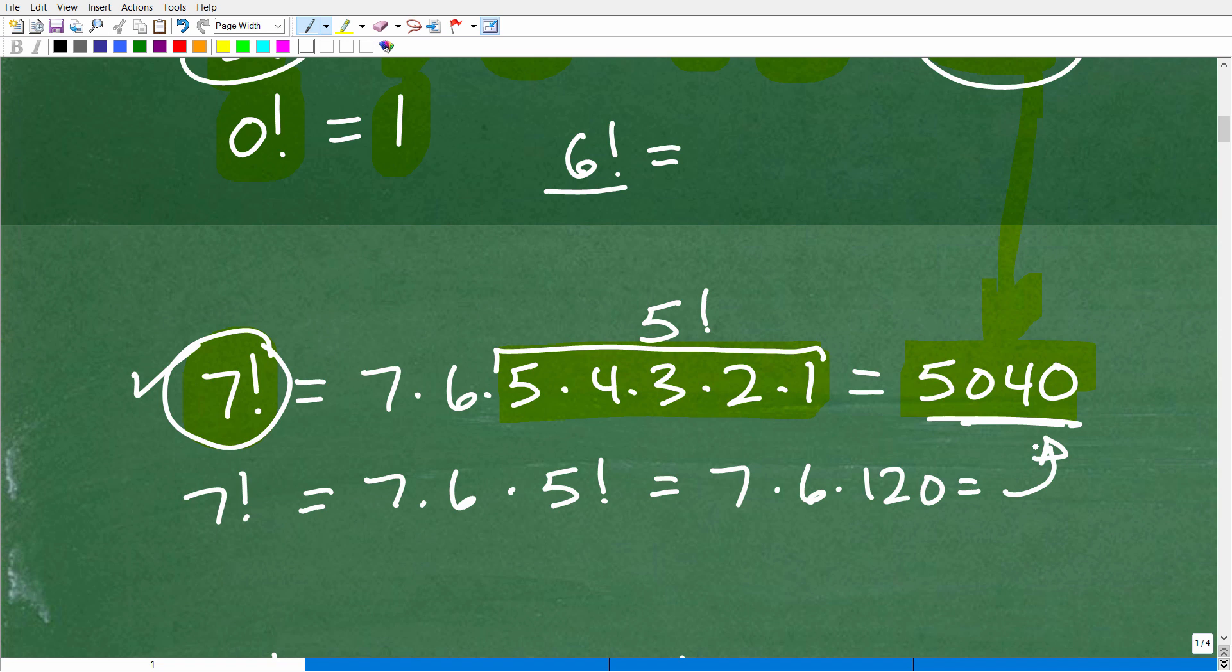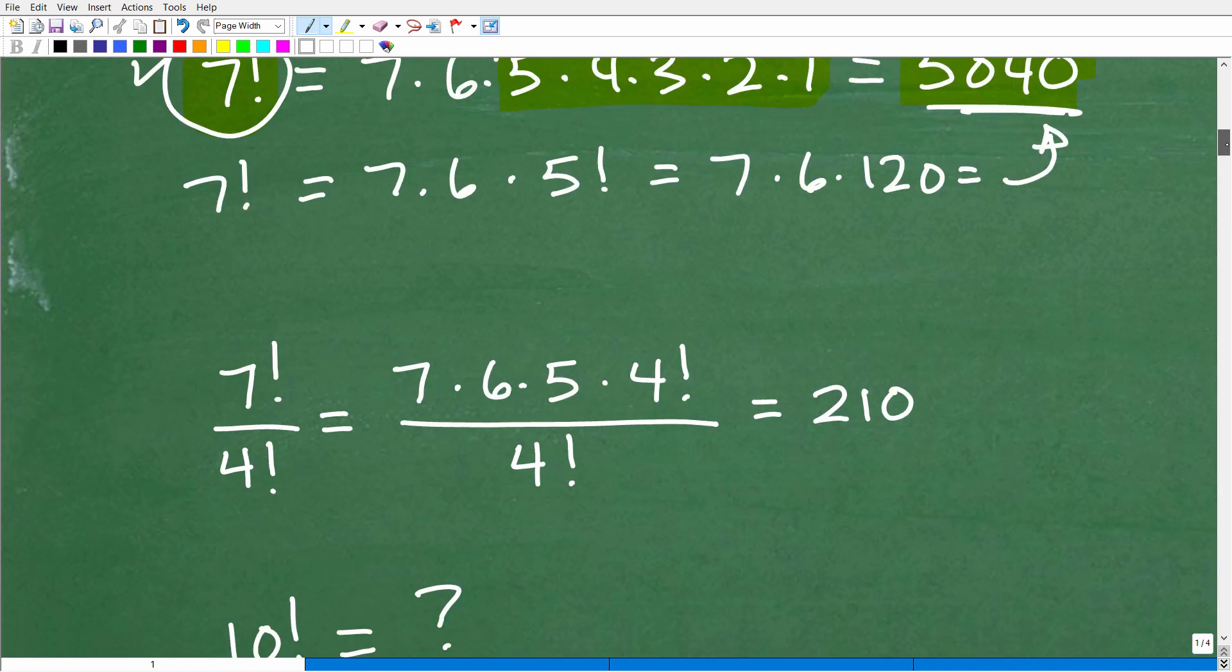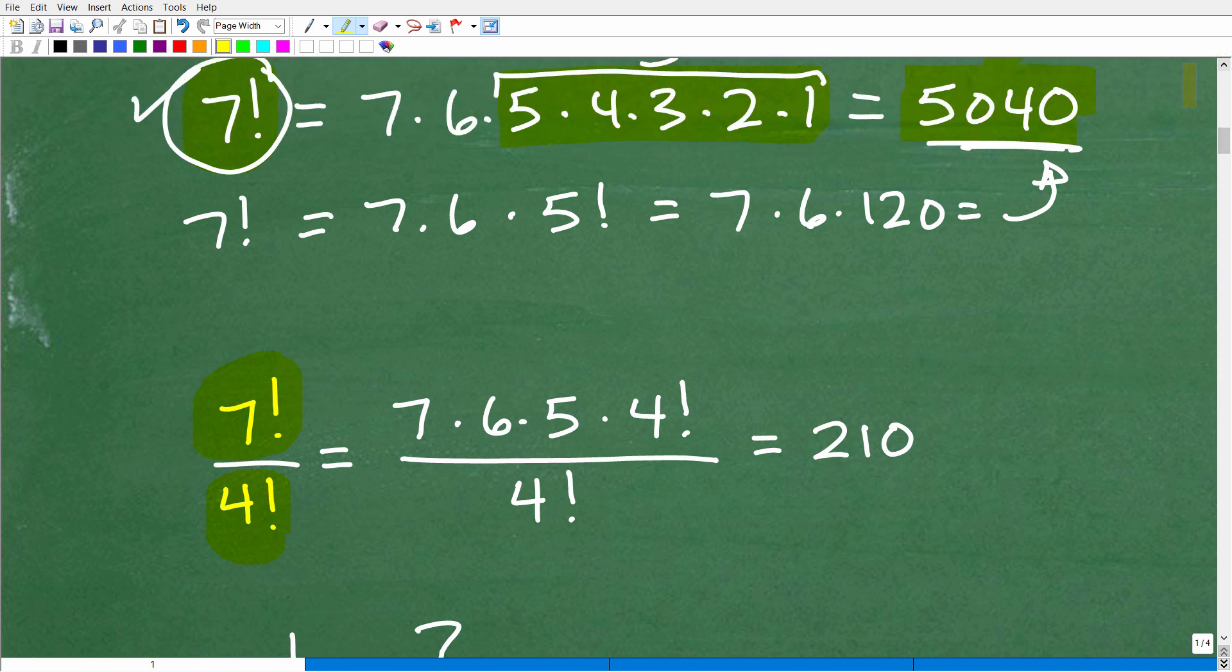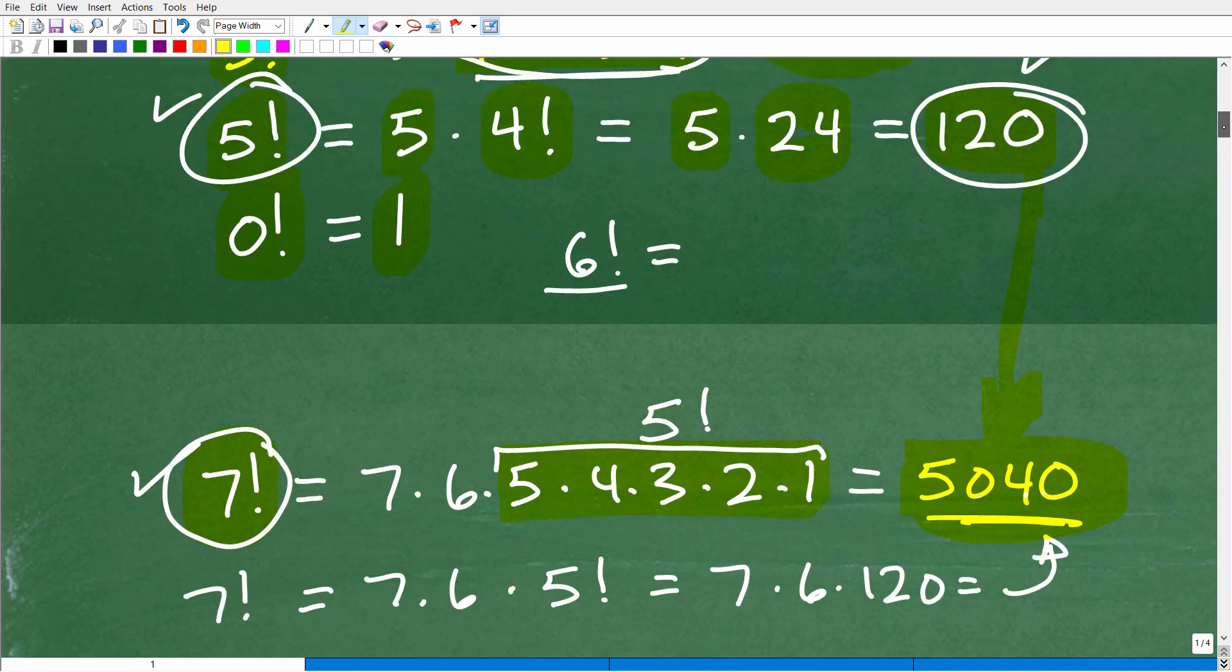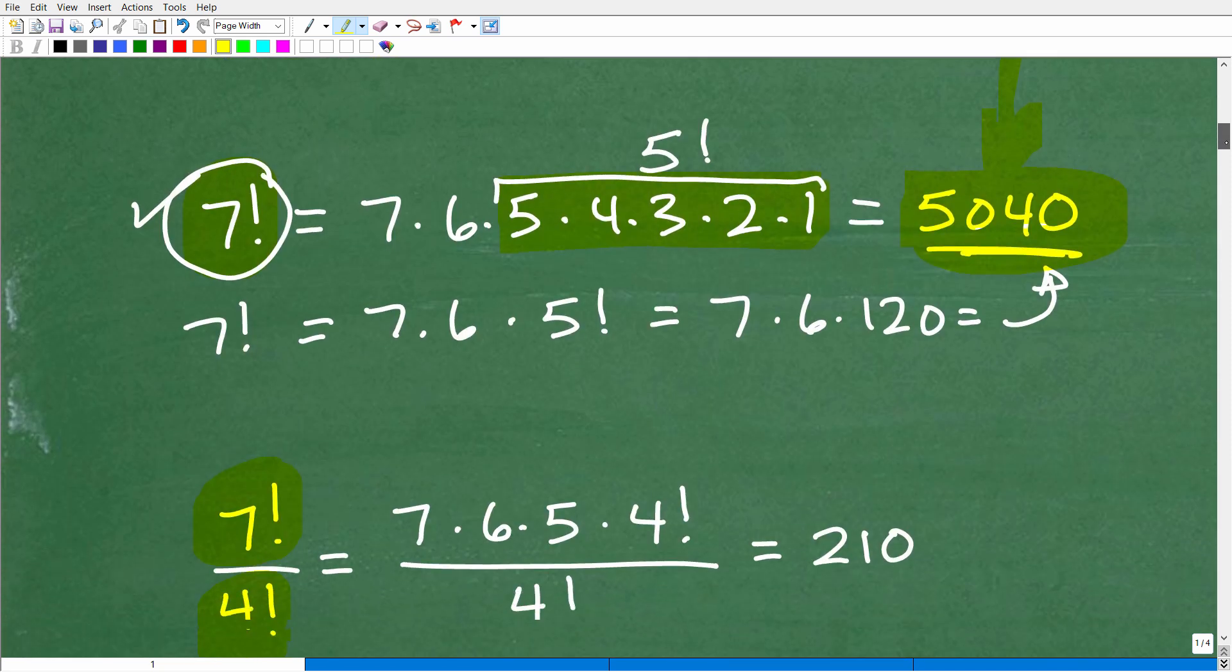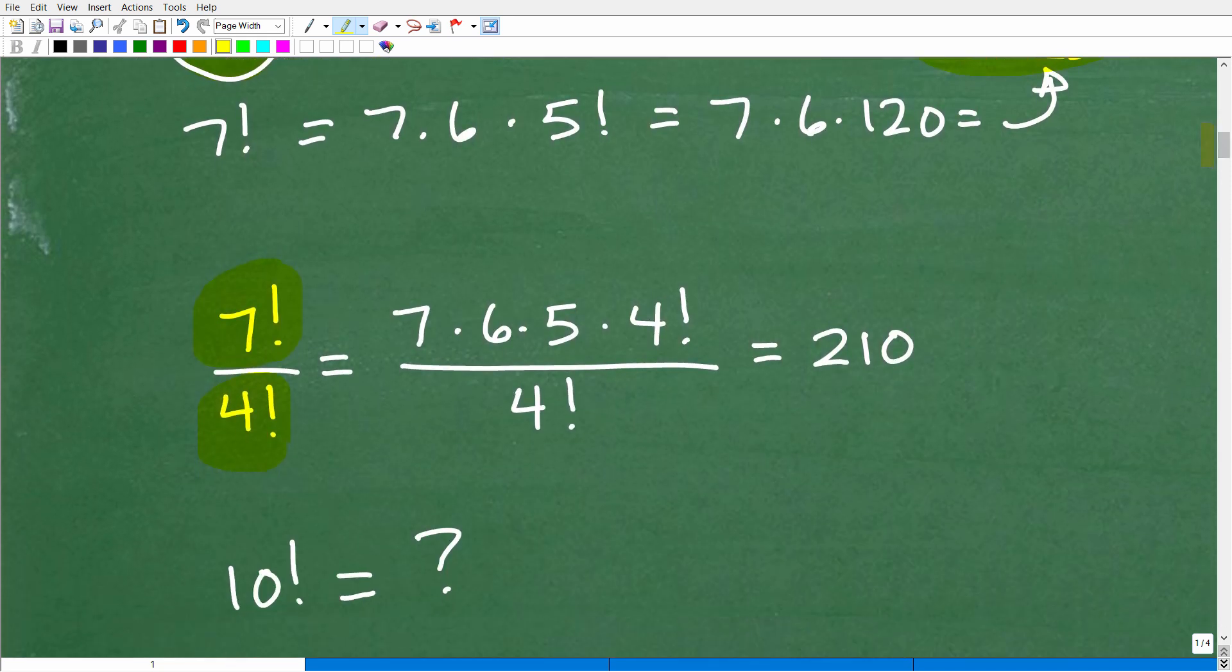So you always want to keep that in mind. But now here is kind of what I want to show you next is how we can simplify problems like this. So let's say we have 7 factorial divided by 4 factorial. So instead of doing 7 factorial, figuring that whole thing out, that's quite a bit of work, right? That's 5,040. And then we divide it by 4 factorial. And, of course, we know what 4 factorial is. That's 24. We could kind of do it that way, but there's no need to do all this work.